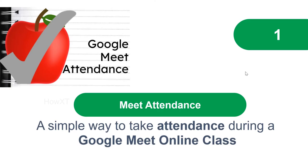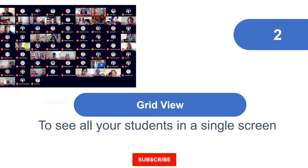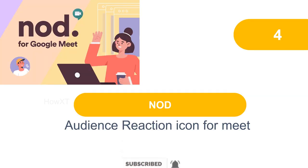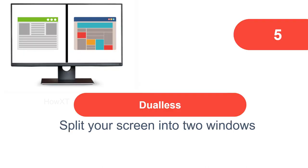To summarize: number one — Meet Attendance, number two — Grid View, number three — Web Paint, number four — Nod, and number five — Dualless to split your screen. Using these extensions, you can make your Google Meet classes more vibrant and effective. Thanks for watching — have a good day!